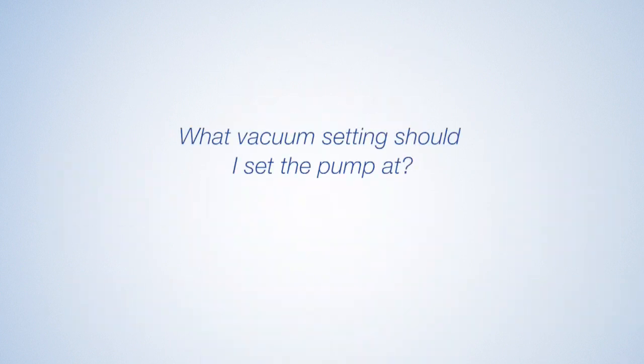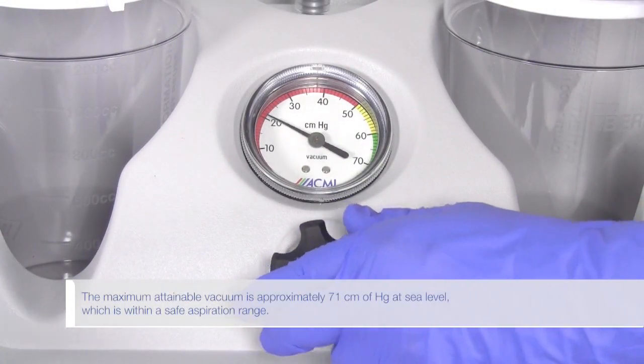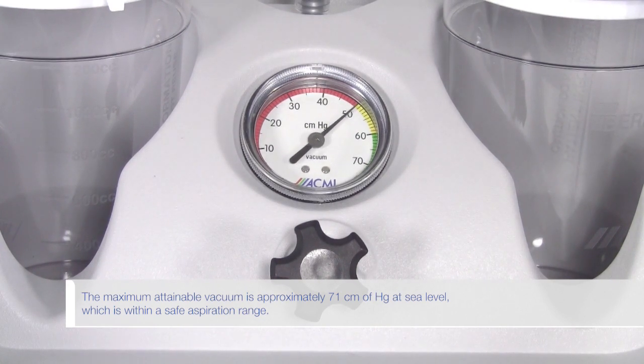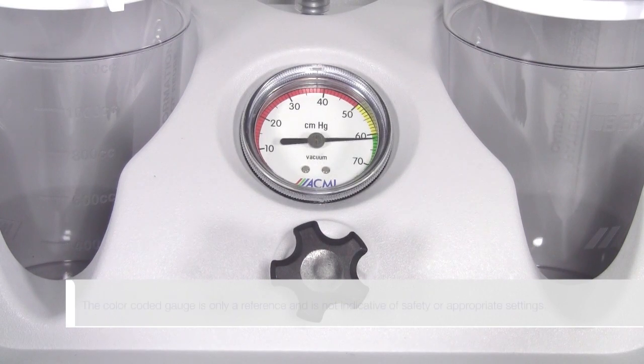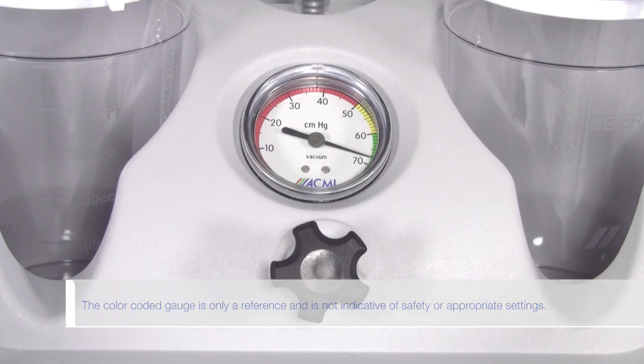What vacuum setting should I set the pump at? The vacuum level is selected by the physician. The maximum attainable vacuum is approximately 71 centimeters of mercury at sea level, which is within a safe aspiration range. The color-coded gauge is only a reference and is not indicative of safety or appropriate settings.